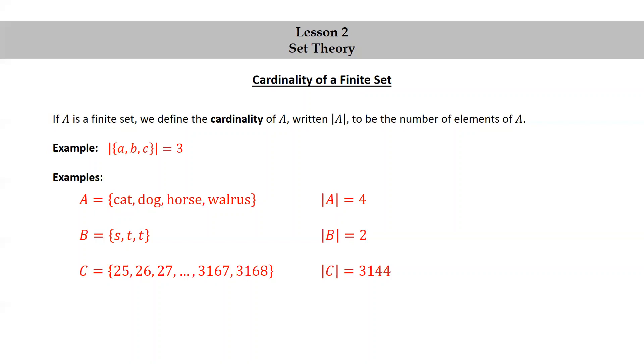So how did we get that? Well, we use what's called the fence post formula, which says the number of consecutive integers from m to n, inclusive, is n minus m plus one.